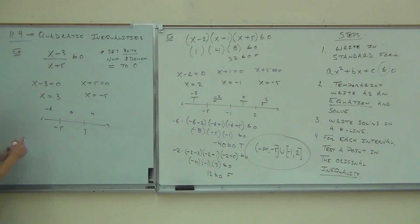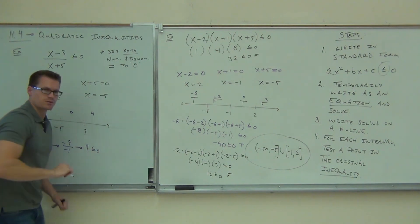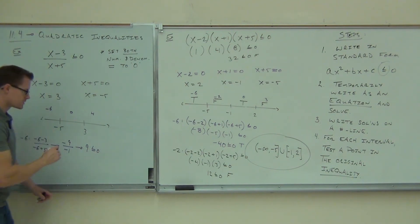I'll do all these with you. With negative 6, you have negative 6 minus 3 over negative 6 plus 5. That's negative 9 over negative 1. Are you following me here? How much is negative 9 over negative 1? Positive or negative? That's where you have to be careful. You have to follow your signs down. Make sure you know a negative over negative is a positive. That gives you 9. Is 9 less than or equal to 0? No. That's false.